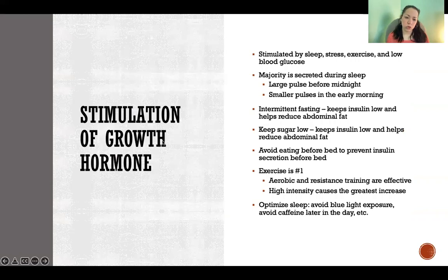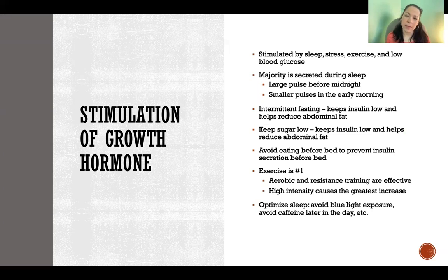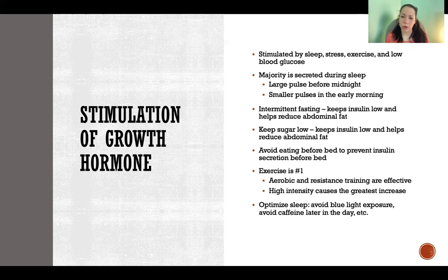So, things we can do to stimulate growth hormone: growth hormone is stimulated by sleep, stress, exercise, and low blood glucose. The majority of our growth hormone is secreted while we're sleeping — we get a big pulse a little bit before midnight, and then smaller pulses earlier in the morning. Somebody who stays up really late and is often up past midnight might be missing that large pulse that happens before midnight. For most of us, we get our largest dose of growth hormone in the entire 24-hour cycle right before midnight if we are sleeping, and then smaller pulses in the morning.